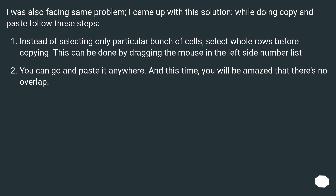Another solution: when doing copy and paste, instead of selecting only a particular bunch of cells, select whole rows before copying. This can be done by dragging the mouse along the left-side row number list. You can then paste it anywhere, and you'll find there's no overlap.